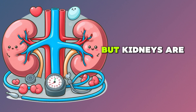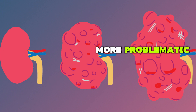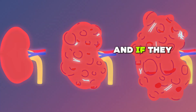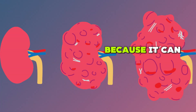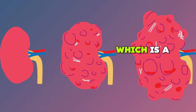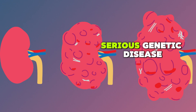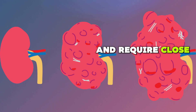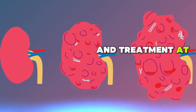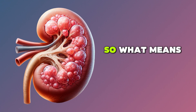The presence of cysts itself does not increase the risk of kidney disease or indicate impaired kidney function. However, kidney cysts are more problematic if they are found at early ages and if they are multiple, because this can indicate polycystic kidney disease, which is a serious genetic disease requiring close monitoring and early treatment.